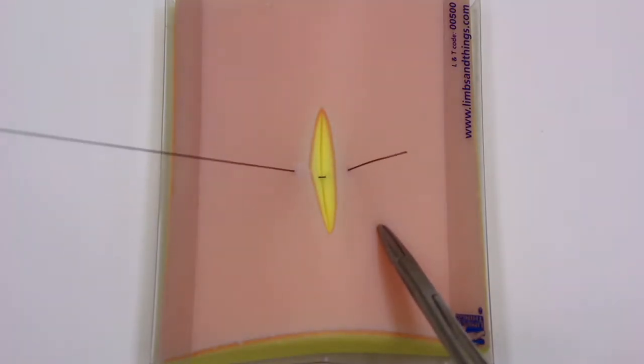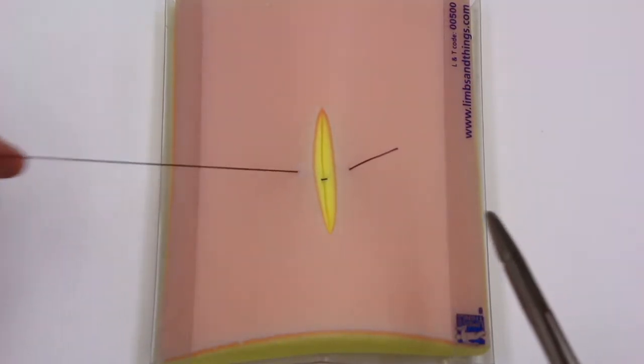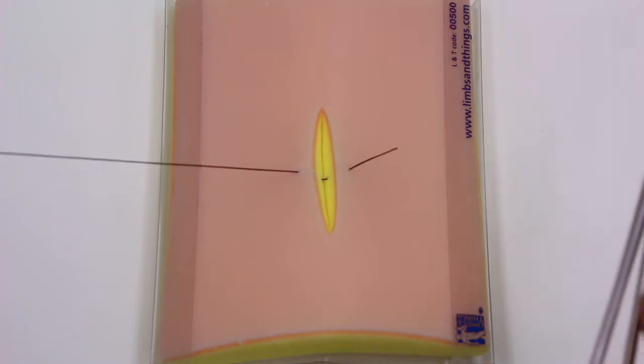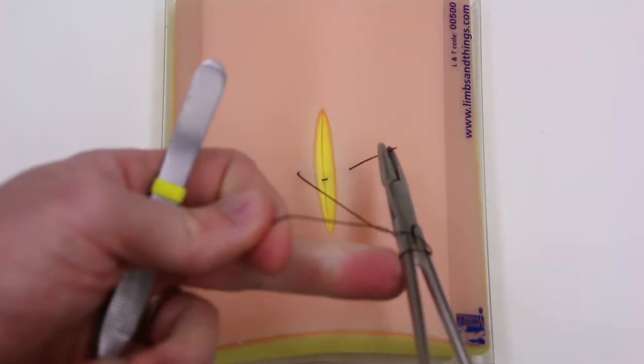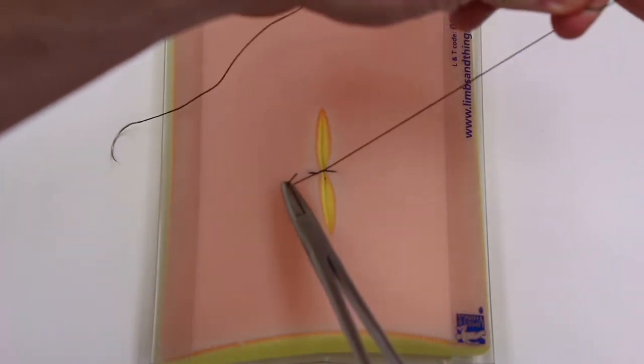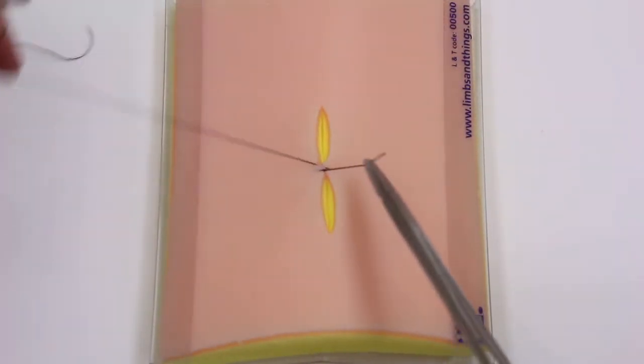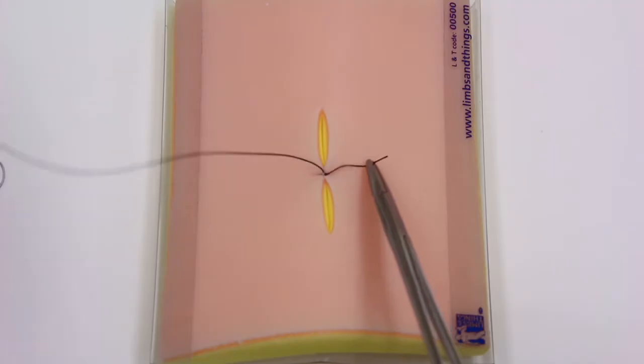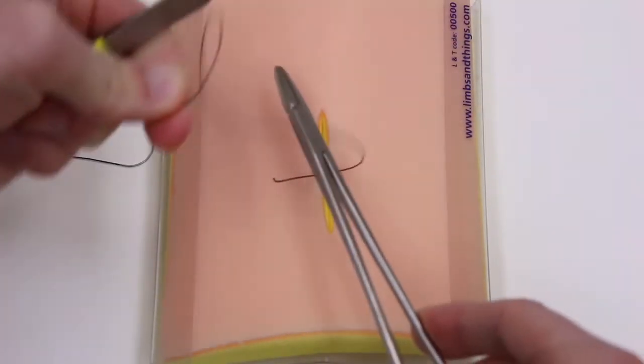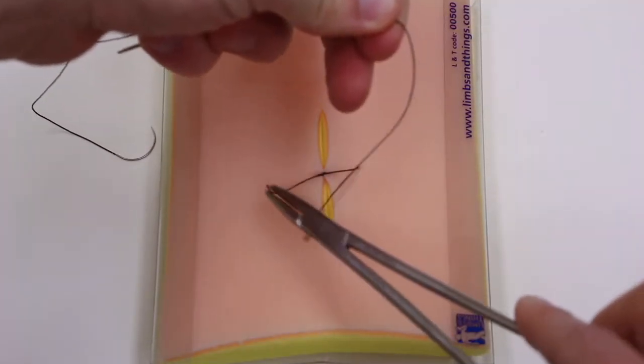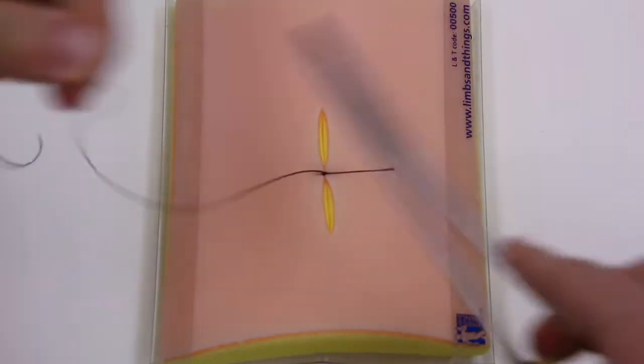Pulling taut, and then it's just the same instrument tie we went over before. So the first is two wraps. You'll notice this first is under a bit of tension, so I'll do that reverse move that I showed. And then one wrap, one wrap, wrap once.